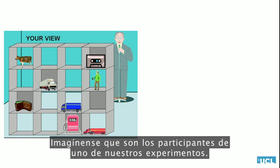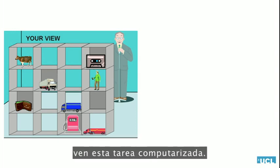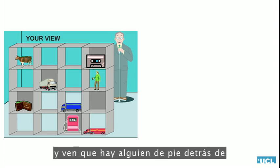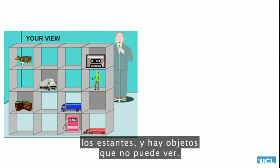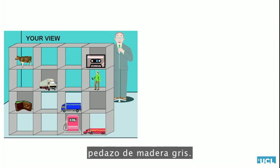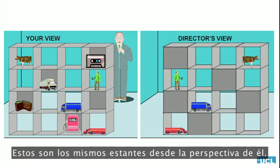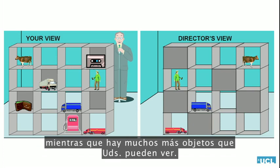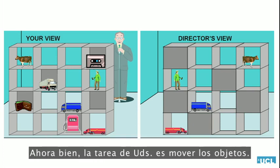Imagine you're a participant in one of our experiments. You come to the lab and see this computerized task. You see a set of shelves with objects on some of them, and there's a guy standing behind the shelves. There are some objects that he can't see — they're occluded from his point of view with a gray piece of wood. This is the same set of shelves from his point of view. Notice that he can only see some objects, whereas you can see many more. Your task is to move objects around.